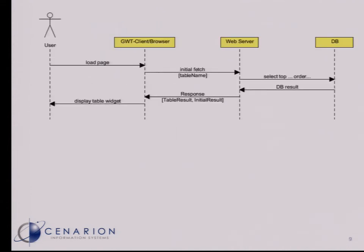What does the sequence of actions look like? We have a user that starts to load a page. In the browser, it runs the GWT client and it says to the server: let's do an initial fetch for that table. It provides the name of that table — just some identifier, because we have tables for employees and tables for other stuff in our database. The first call does a plain select and orders the result with no other constraints.